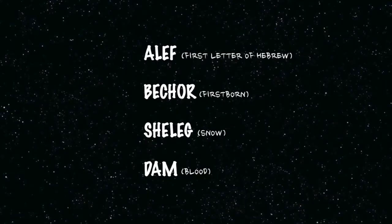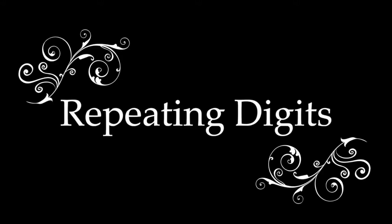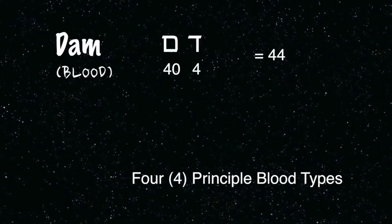I would like to take a look at four words: Alef, Bechor, Sheleg, and Dam — that is, the first letter of the Hebrew Alef-Bet, the word we translate into English as firstborn, the word for snow, and the word for blood. Let's start with Dam. Dalet — the value of the letter Dalet is four — and Mem, the second letter, together create the number forty-four, a repeat of one digit. What does four have to do with blood? Four varieties of blood. You could say it's a coincidence, it doesn't mean anything.